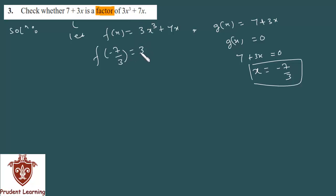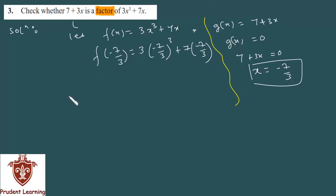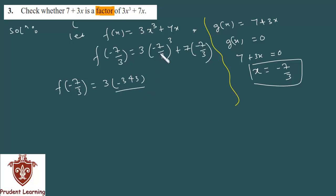तो यह हो जाएगा: 3x cube plus 7x में x = minus 7 upon 3 डालेंगे। f of minus 7 by 3 निकालते हैं — यह 3 तो cancel हो रहा है। minus 7 का cube होता है minus 343, actually minus का cube तो minus है, 7 का cube होता है 343। upon 3 का cube जब करेंगे वो हो जाएगा 27।